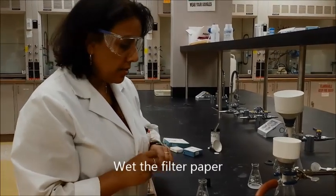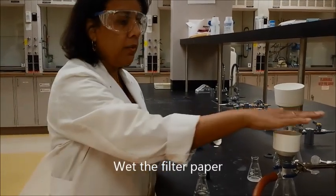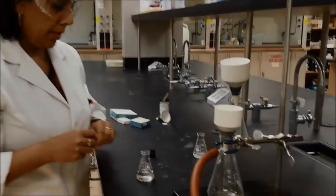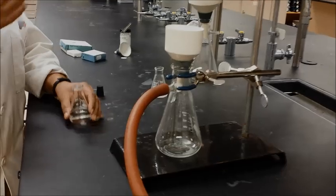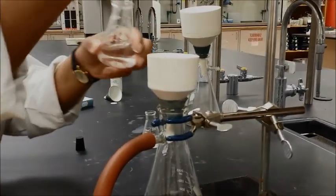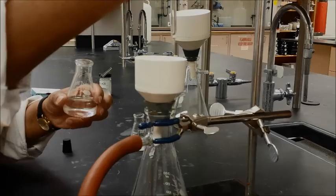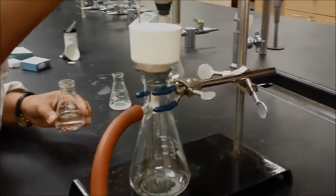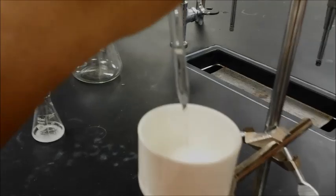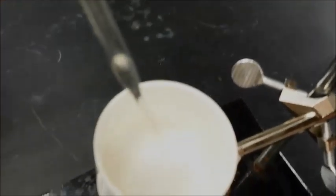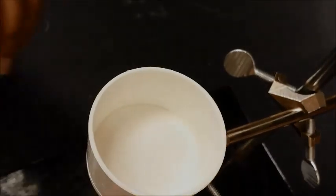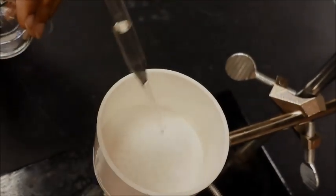I'm using hexane, so I will use hexane to go ahead and wet my filter paper. If I was using methanol, I would use methanol to set the filter paper. So, this is how you would do it and just pour a little bit of hexane on the Buchner funnel. So, make sure that the entire filter paper gets wet.